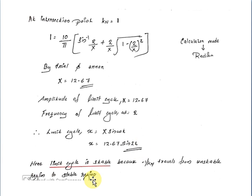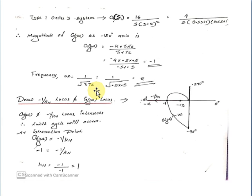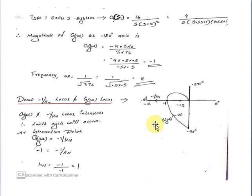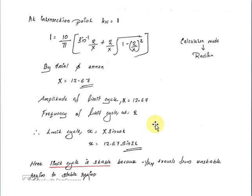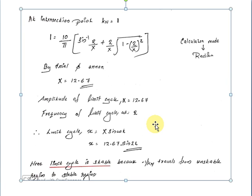The minus 1 by KN locus travels from the unstable region to the stable region. Therefore the system is stable. The limit cycle is stable because the minus 1 by KN locus travels from the unstable region to the stable region.